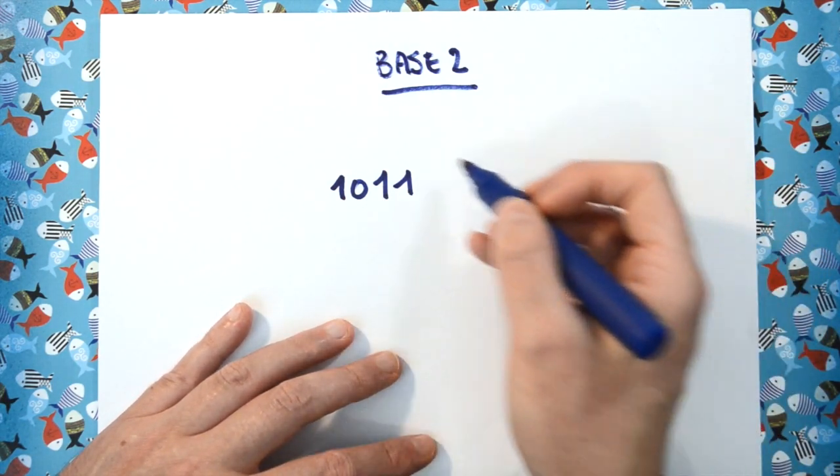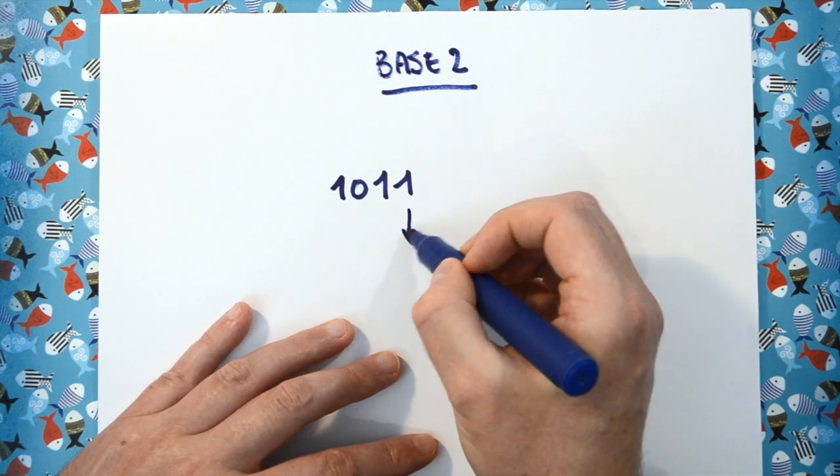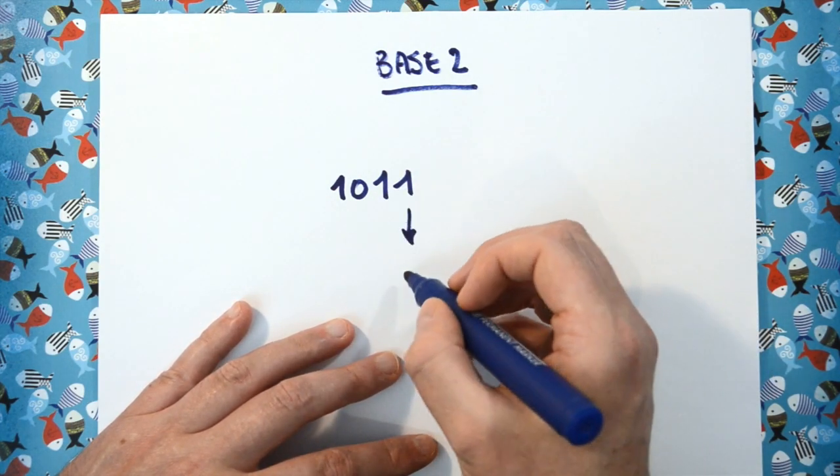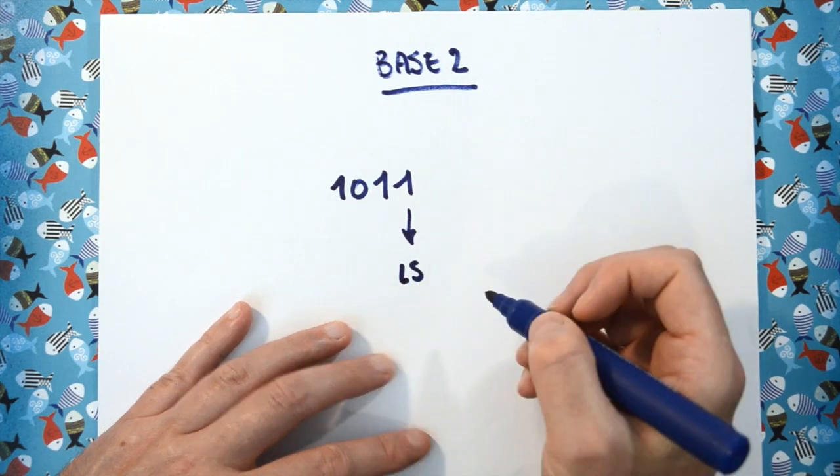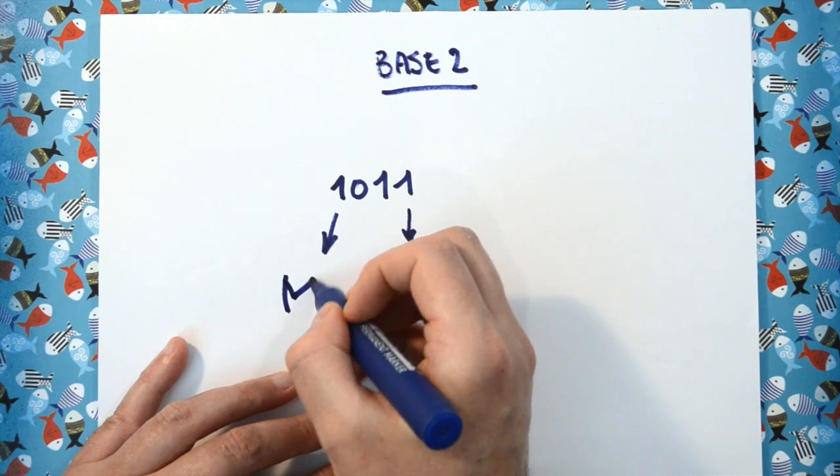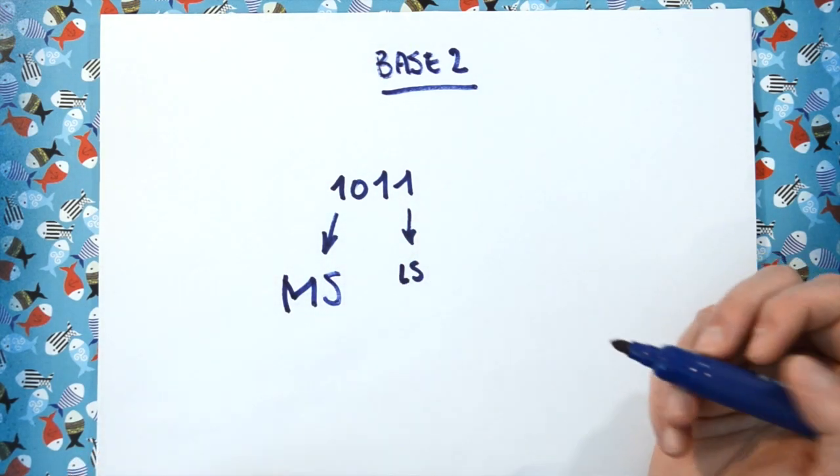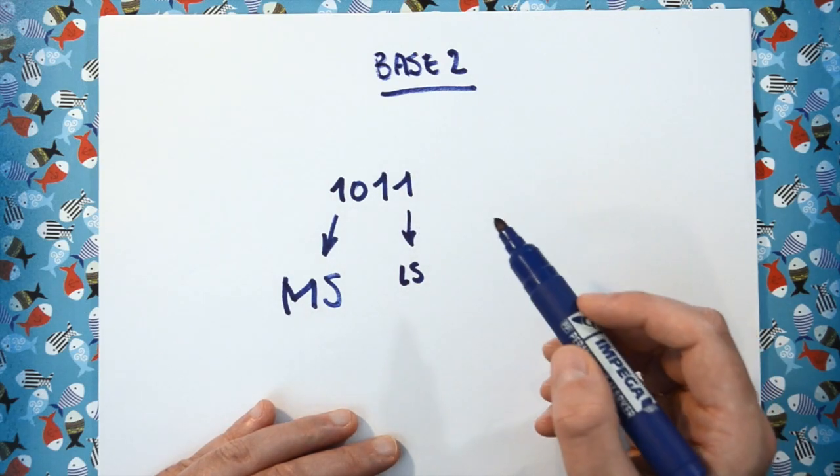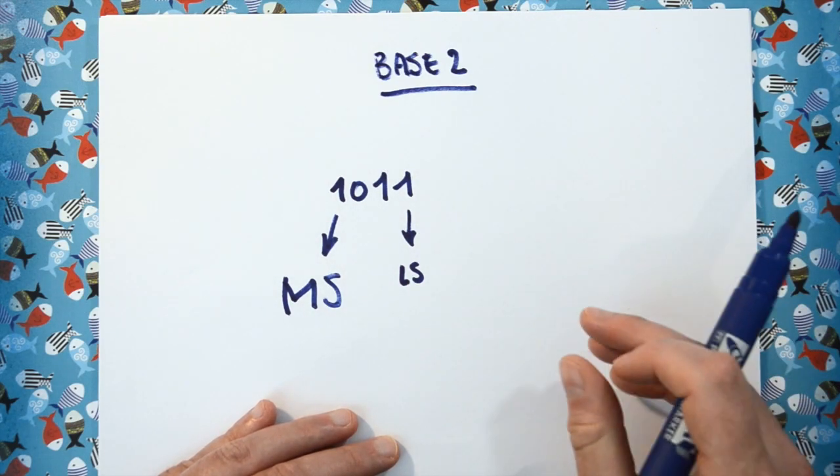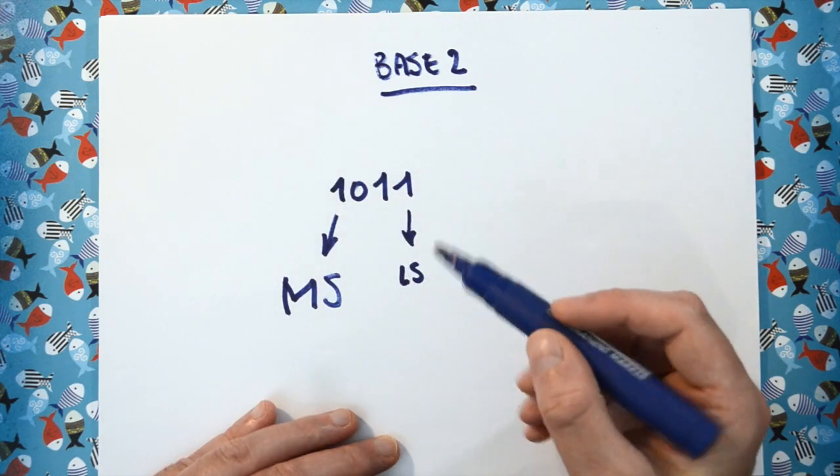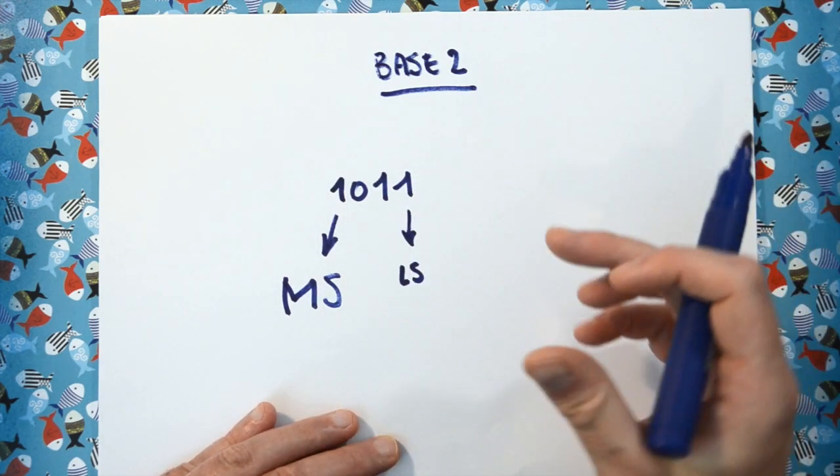So in this binary number, the first one, and by the first I mean the most right one, is the least significant bit. And the bit to the left is the most significant bit, which just means changing the first bit will cause a little change, and changing the most left bit will cause a big change.